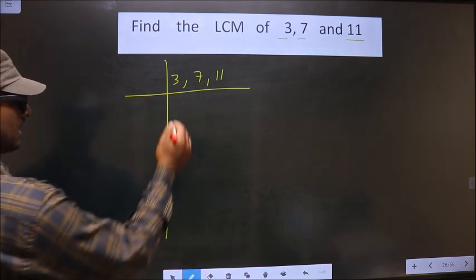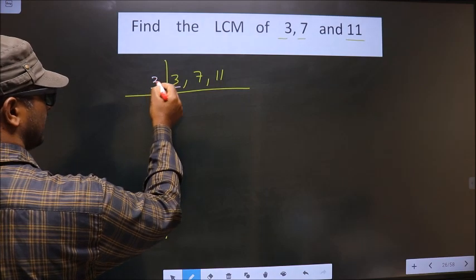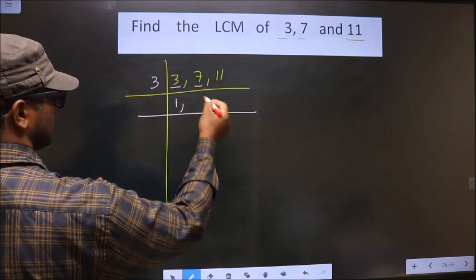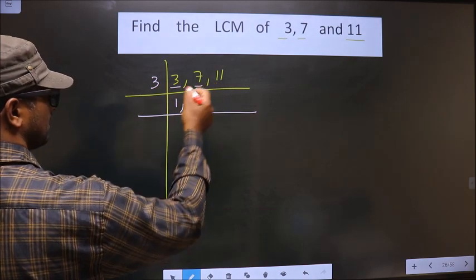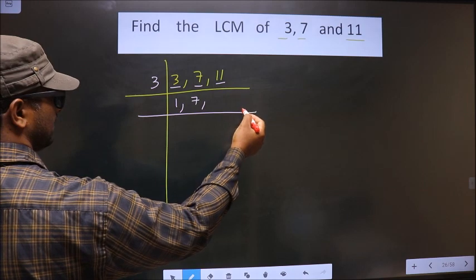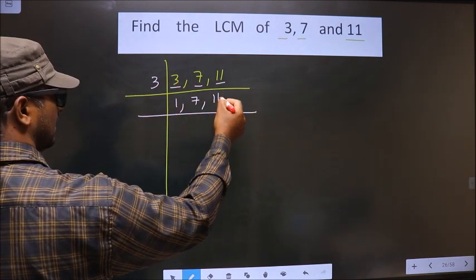Next, the first number is 3. 3 is a prime number so you take 3 here. 3 goes into 3 once. Next number is 7. 7 is not divisible by 3 so as it is you write it down. Next number is 11. 11 is not divisible by 3 so as it is you write it down.